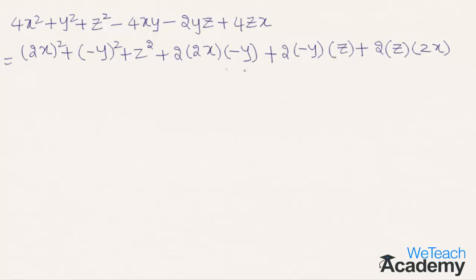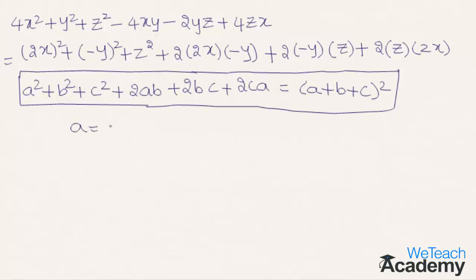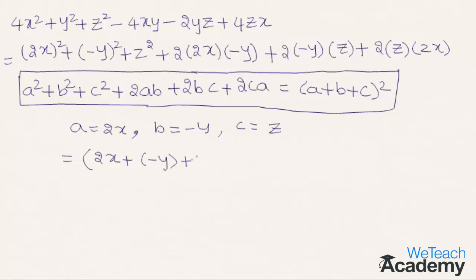We observe that this expression is in the form a² + b² + c² + 2ab + 2bc + 2ca = (a + b + c)². By comparing the expression with the formula, we get a = 2x, b = −y, and c = z. Writing the expression in the form of (a + b + c)², we get (2x + (−y) + z)².